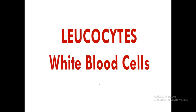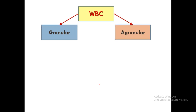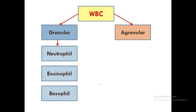Today we begin with leukocytes or white blood cells (WBC). There are two types of white blood cells: granular (granulocytes) and agranular (agranulocytes). There are three types of granulocytes present in the blood: the first is the neutrophil, the second is the eosinophil, and the third is the basophil.